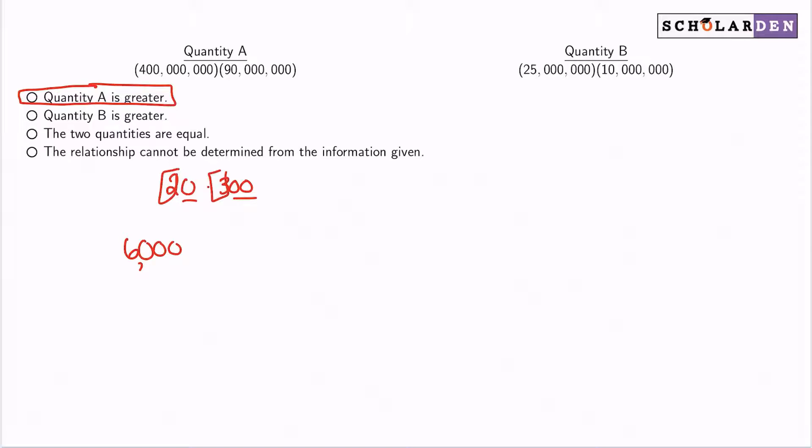For quantity A, we have 4 and 9. So 4 times 9 gives us 36. And then how many zeros do we have? Three, six, seven, eight over there. So we have eight zeros here, and then three, six, seven there. Eight and seven makes 15 zeros. That is a lot.